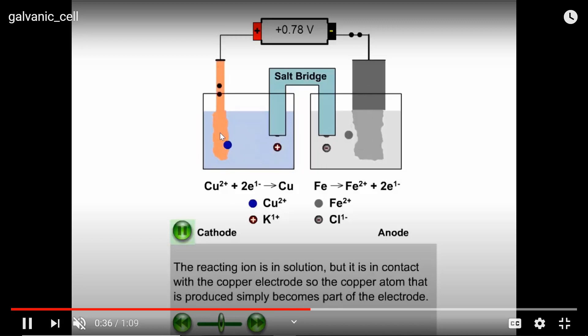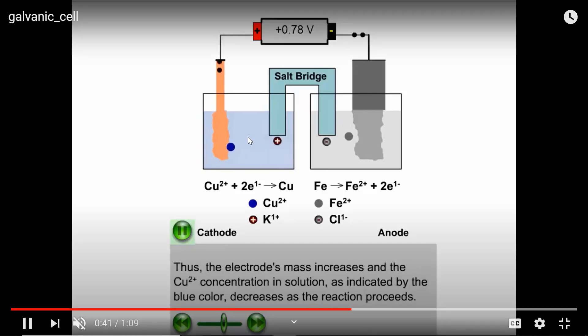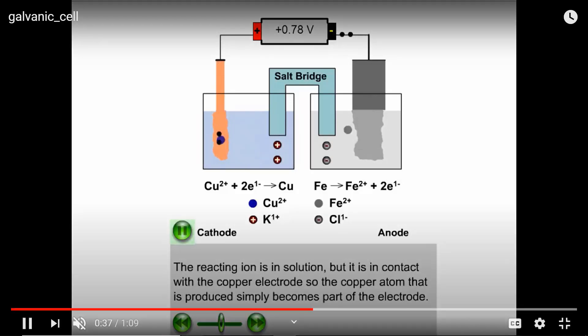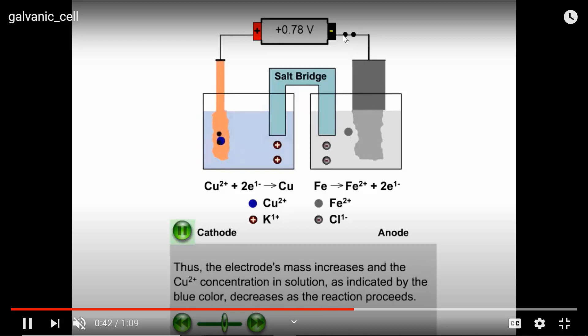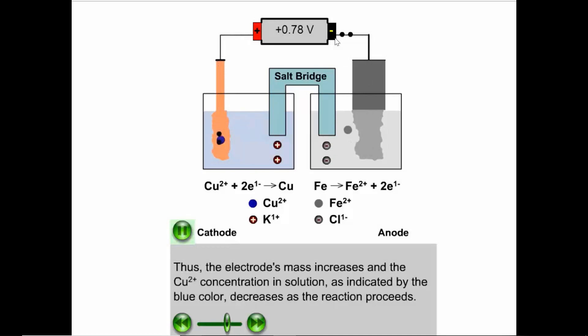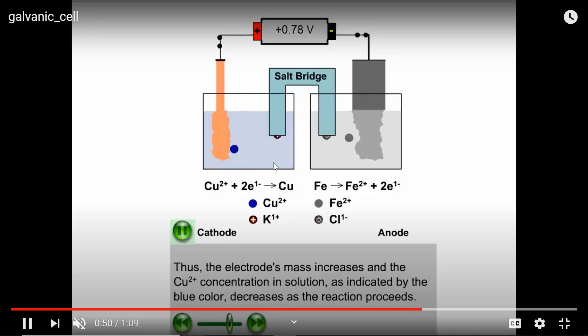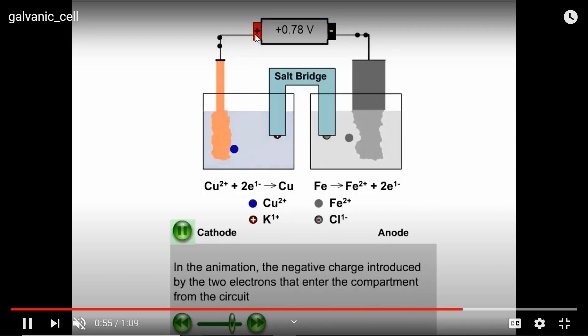Notice how the copper electrode is actually getting larger as the reaction goes. That's because the copper 2+ in solution is becoming solid copper and adding to that electrode. And last of all, please notice how in the salt bridge, the negative anion is going toward the electrode with the negative voltage associated with it, and the positive cation is going toward the compartment which is associated with the more positive reduction potential voltage.